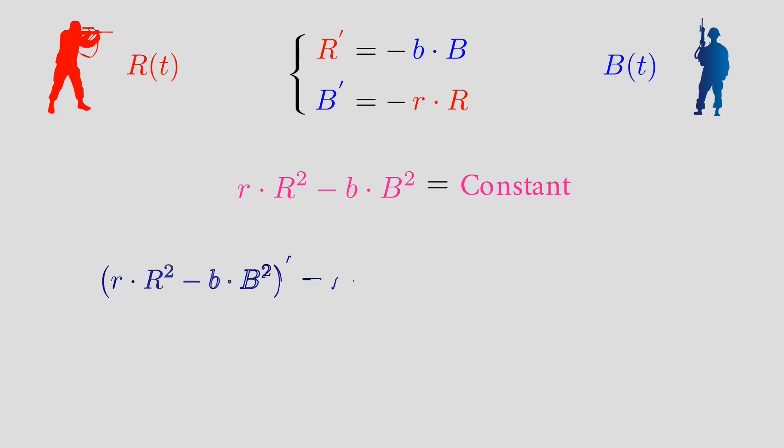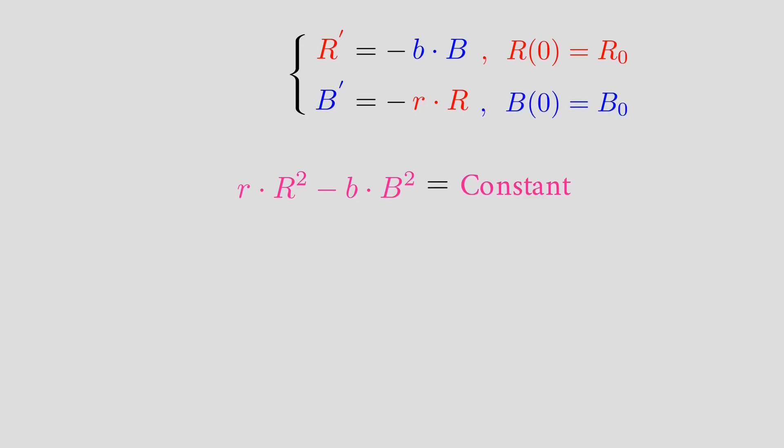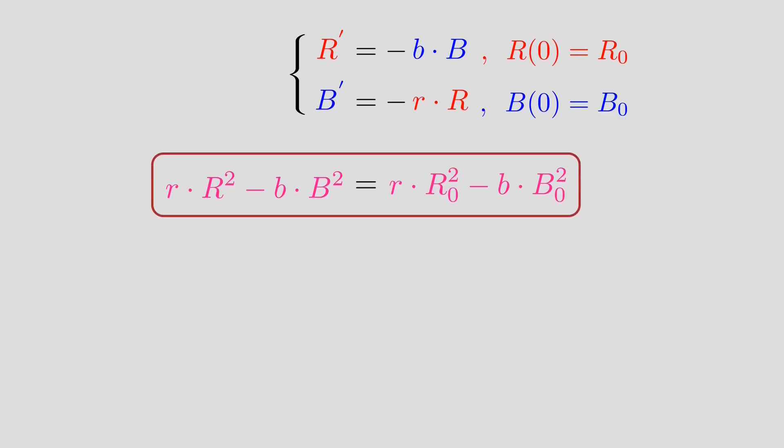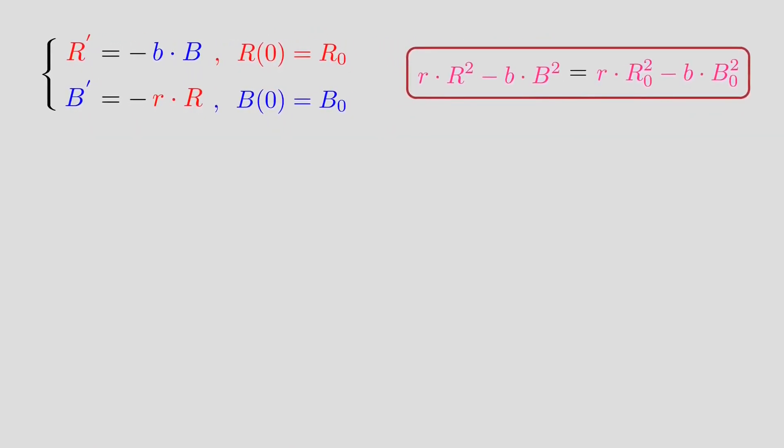Since this expression is constant, and if we suppose that R_0 is the initial number of red army soldiers, that is the number of red army soldiers at the start of the battle, and B_0 is the initial number of blue army soldiers, then our expression, which is constant for all t, will equal the same expression, but at time t equals zero. Beautiful.